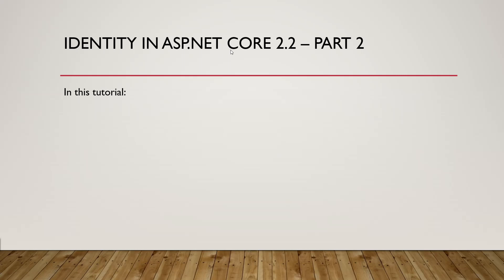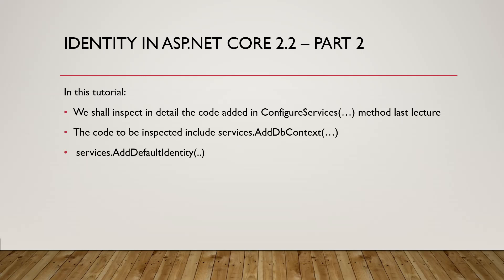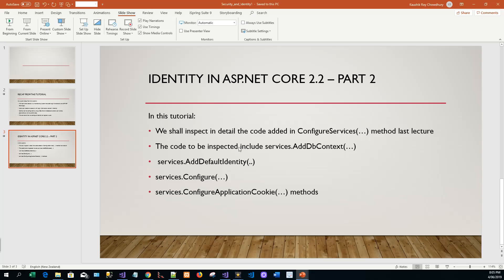Welcome back. Today we are going to cover the second part of the tutorial that I started in the first part, which was on Identity in ASP.NET Core 2.2. If you haven't gone through that lecture, please do so before coming to this part, because this part is entirely based upon the code already written in the last part. In this tutorial, we shall inspect in detail the code added in the ConfigureServices method in the Startup class.